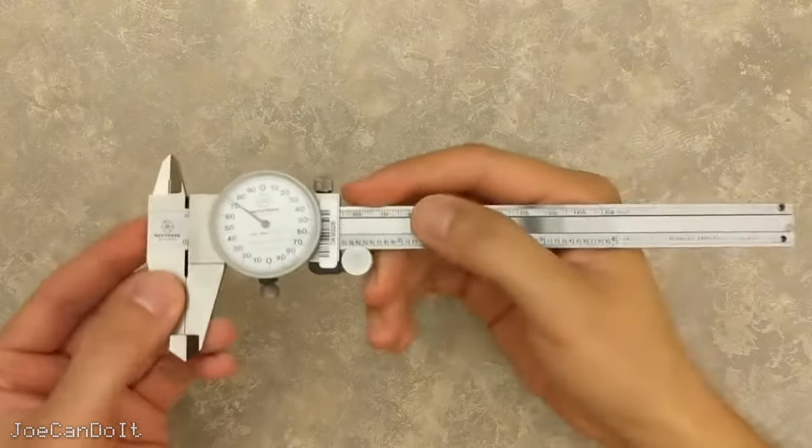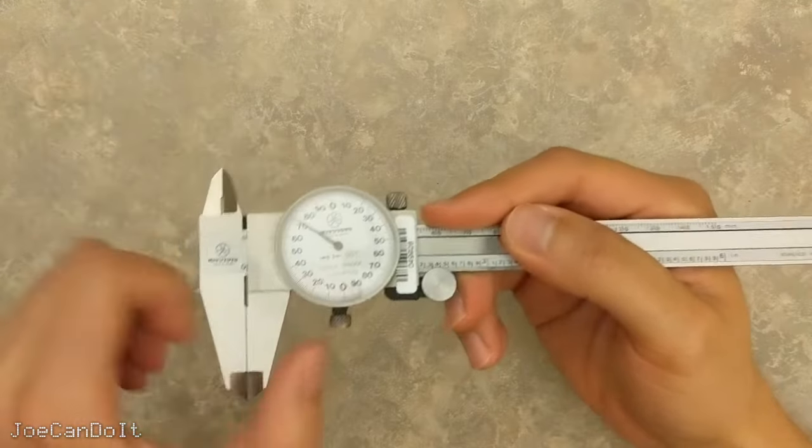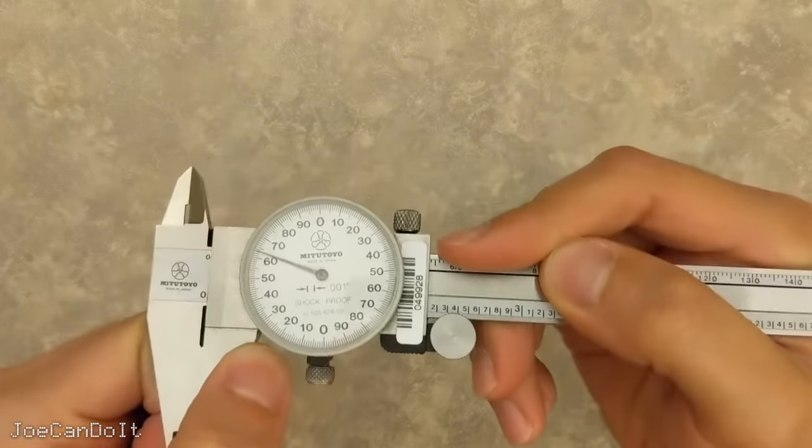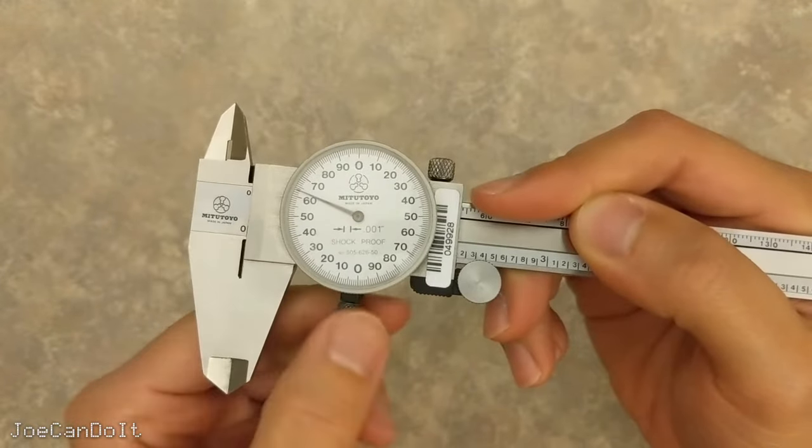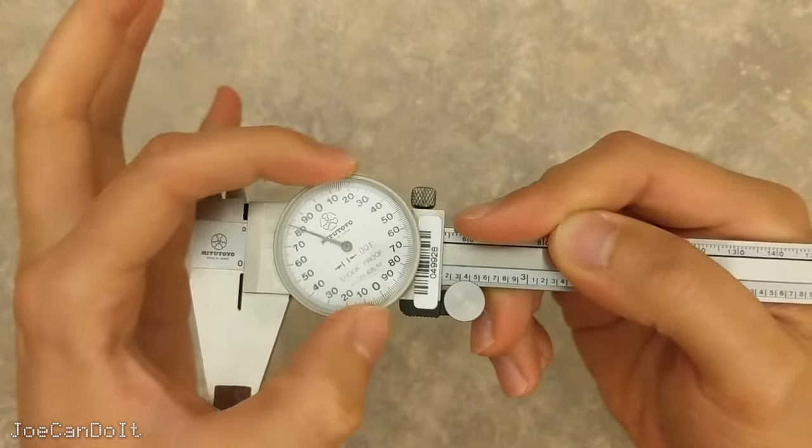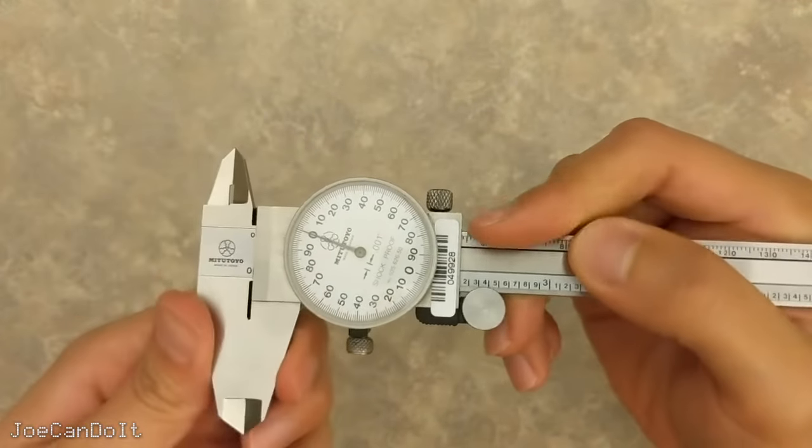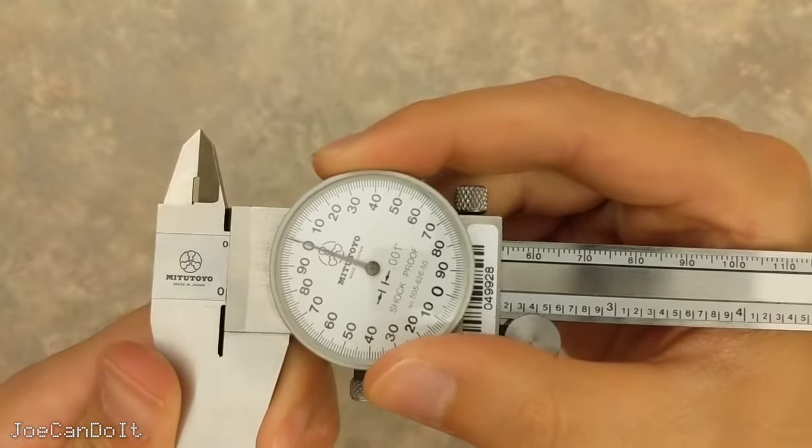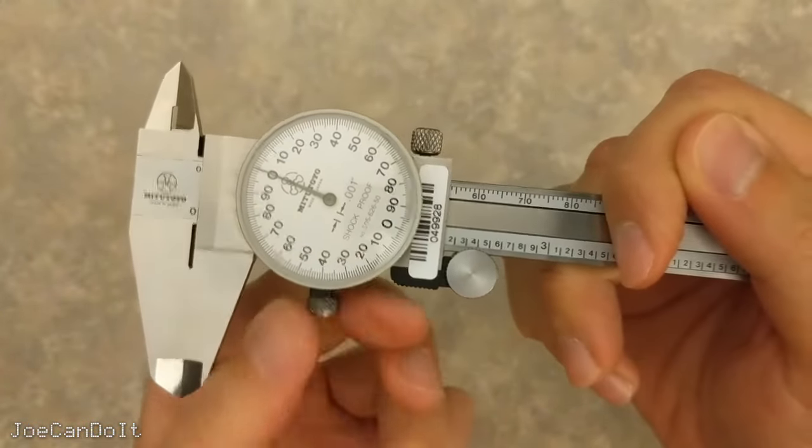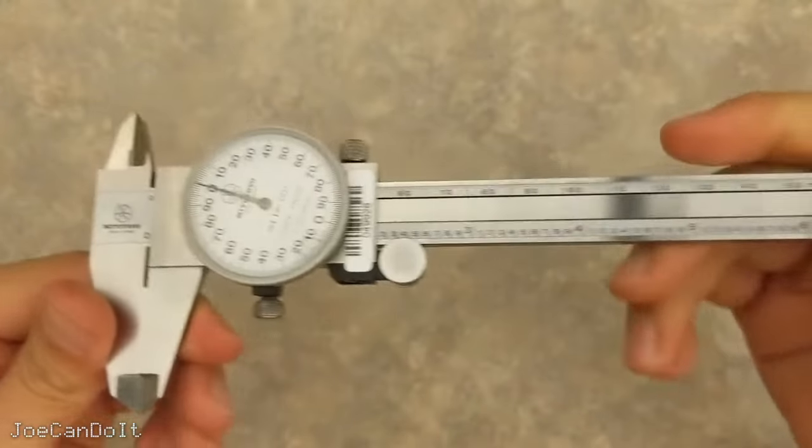The first thing you want to do is make sure that this dial is on zero when these jaws are closed. To do that, just go to this knob over here, loosen it, and rotate this dial until the needle hits zero when these are fully closed. So that is right about there. Tighten it. Now your caliper is zeroed out.